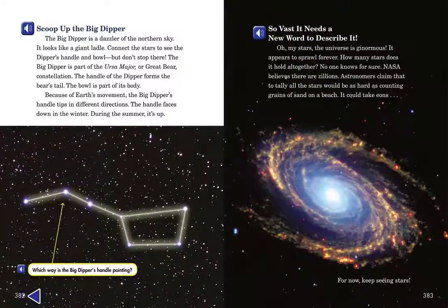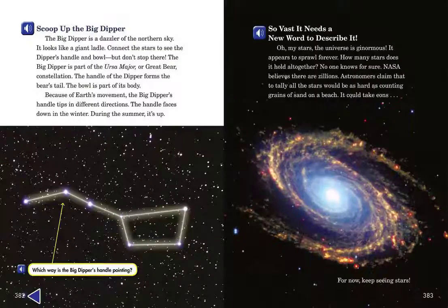Scoop up the Big Dipper. The Big Dipper is a dazzler of the northern sky. It looks like a giant ladle. Connect the stars to see the Dipper's handle and bowl. But don't stop there. The Big Dipper is part of the Ursa Major, or Great Bear, constellation. The handle of the Dipper forms the bear's tail. The bowl is part of its body.